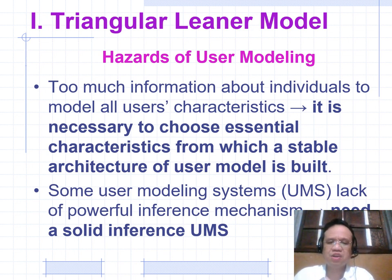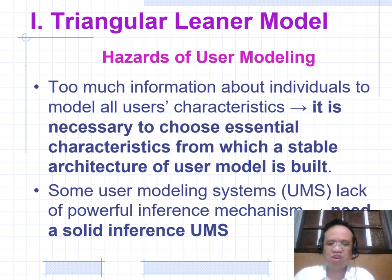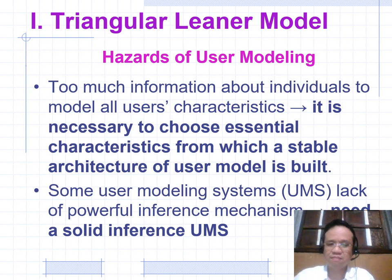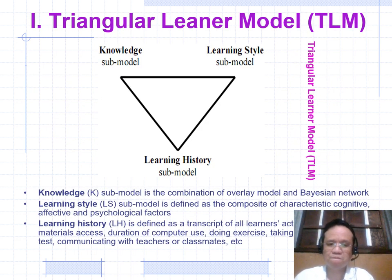Hazards of User Modeling: There is too much information about individuals to model all user characteristics. It is necessary to select essential characteristics from which a stable architecture of the user model is built. Some user modeling systems (UMS) lack a powerful inference mechanism and need a solid inference UMS.